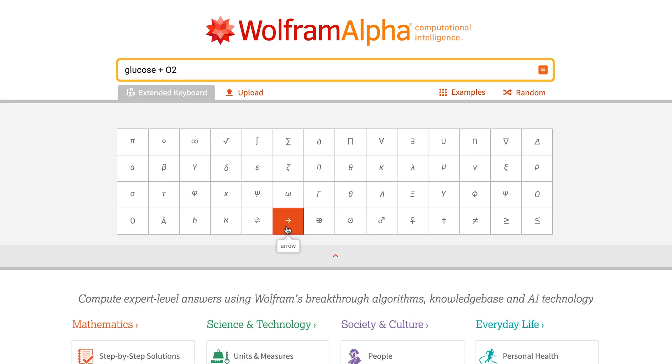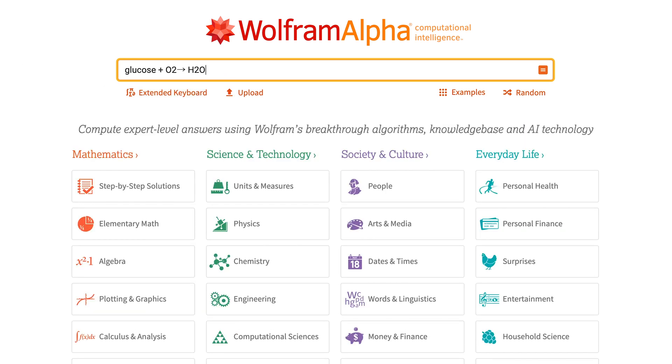For example, glucose plus O2, arrow H2O plus CO2. You can type the arrow using the extended keyboard or a hyphen and a greater than sign.